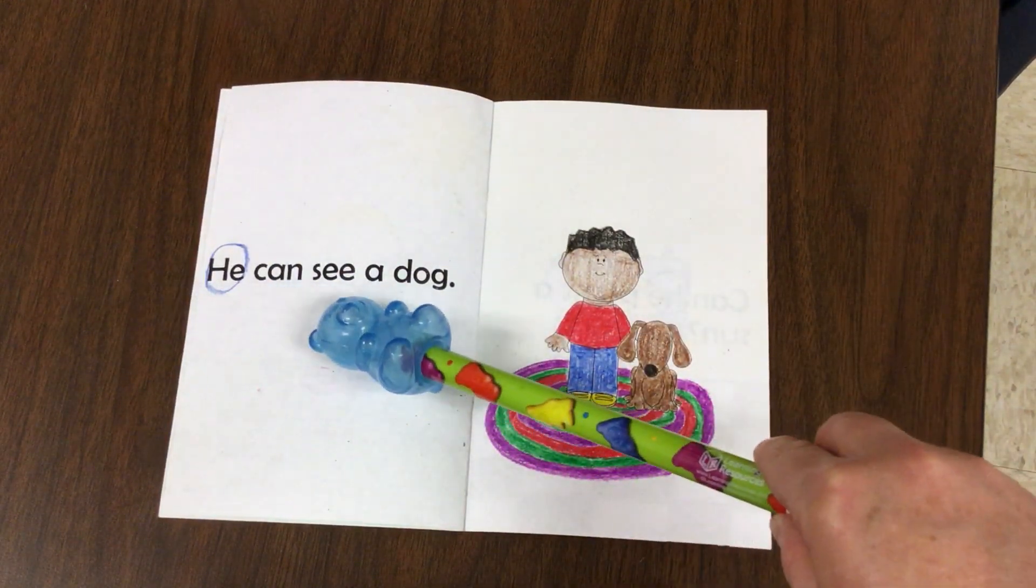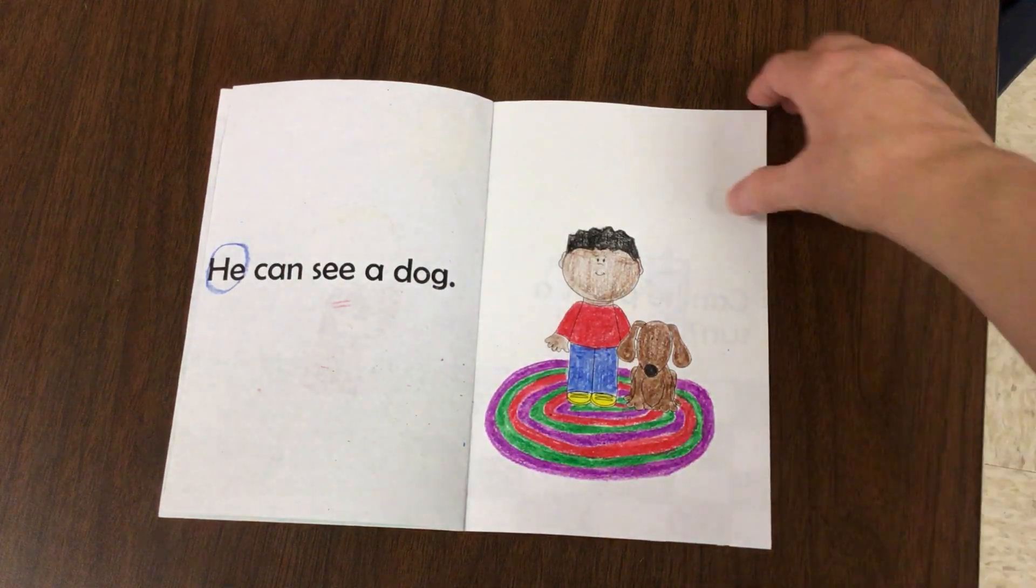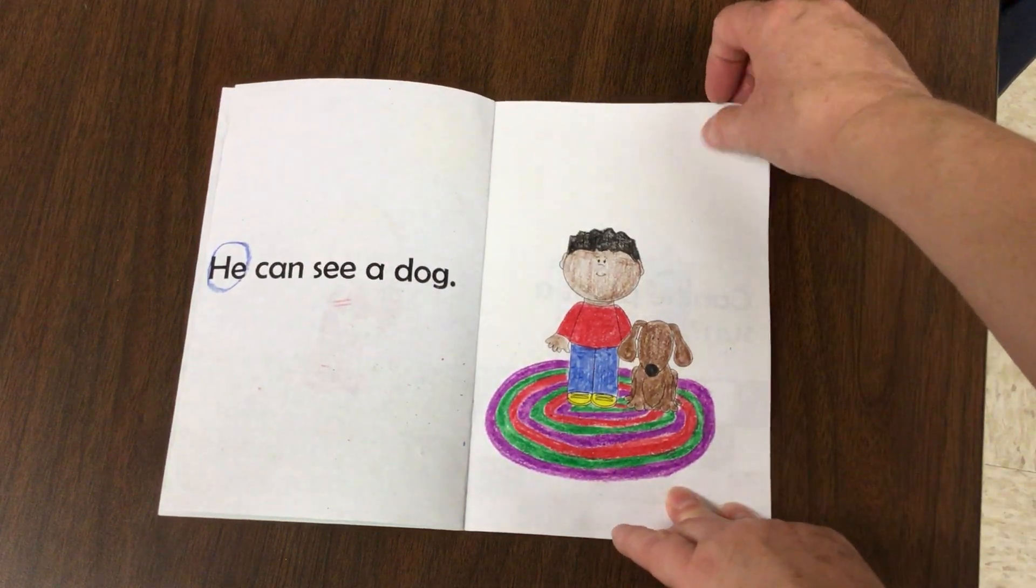He can see a dog. This time we have a period because we're telling someone.